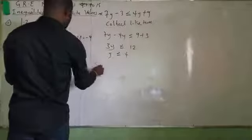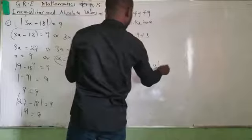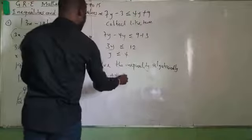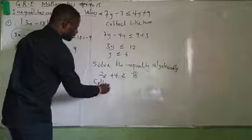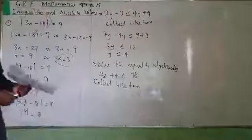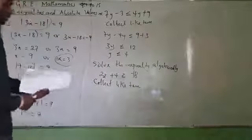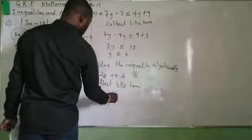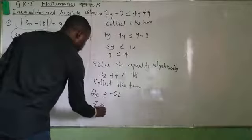I have solved the inequality. I have 2Z plus 4 greater than or equal to minus 18. I want to solve this. Collecting like terms: 2Z less than or equal to minus 22. It means my Z will be less than or equal to minus 11. That is just it.